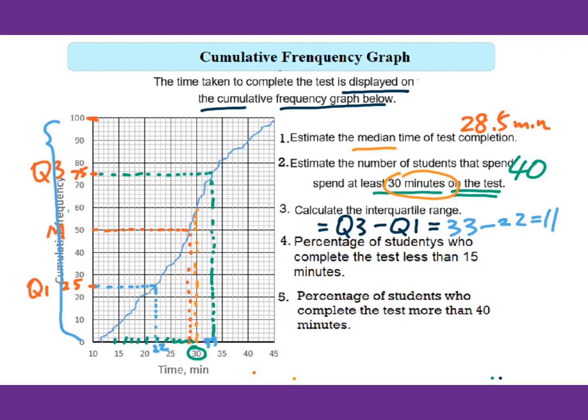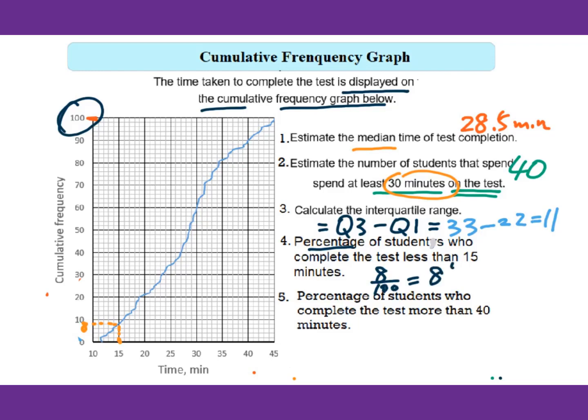For number four, percentage of students who complete the test less than 15 minutes. We will find the 15 minutes here. Then still vertical line cross to find how many students. That will be 8, which means 8 students spent less than 15 minutes on the test. We need a percentage. Altogether we have 100 people. So 8 over 100, that will be 8 percent.